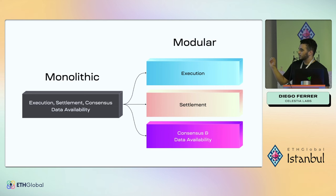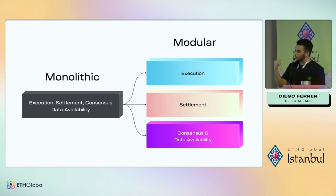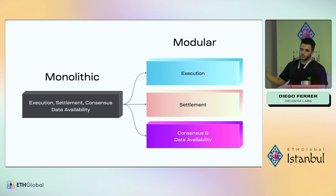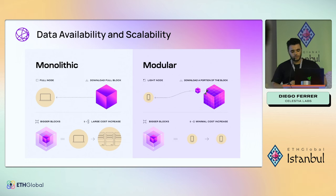Chains like Solana or Ethereum are monolithic because they fulfill all the functions of a blockchain in a single layer: execution, settlement, consensus, and data availability. Celestia only focuses on consensus and data availability, and delegates settlement and execution to other parties — in this case, rollups. How is data availability related to scaling?